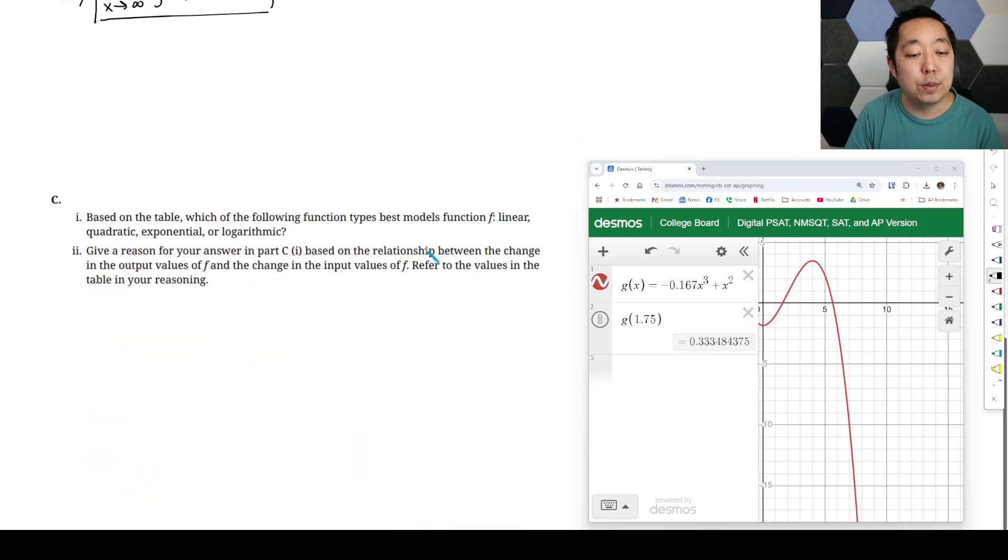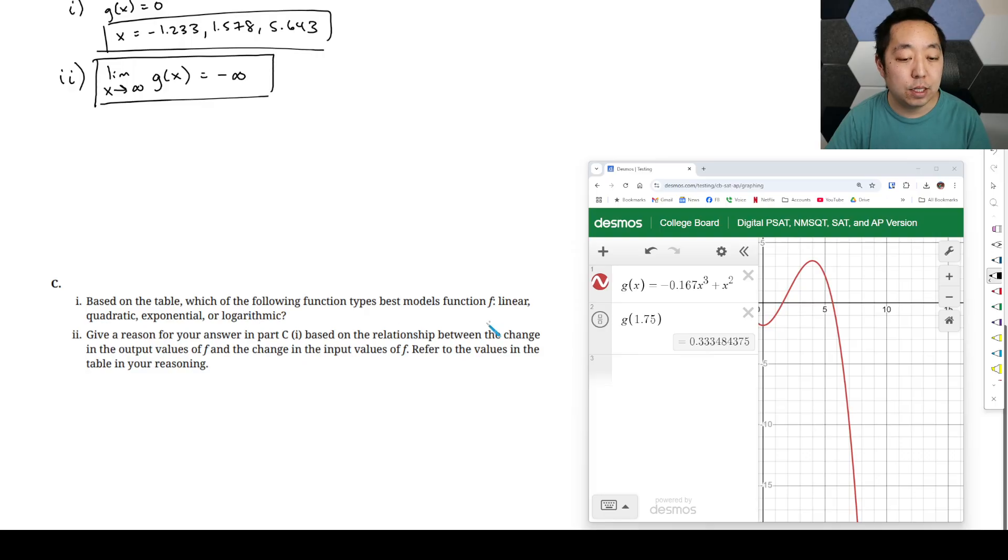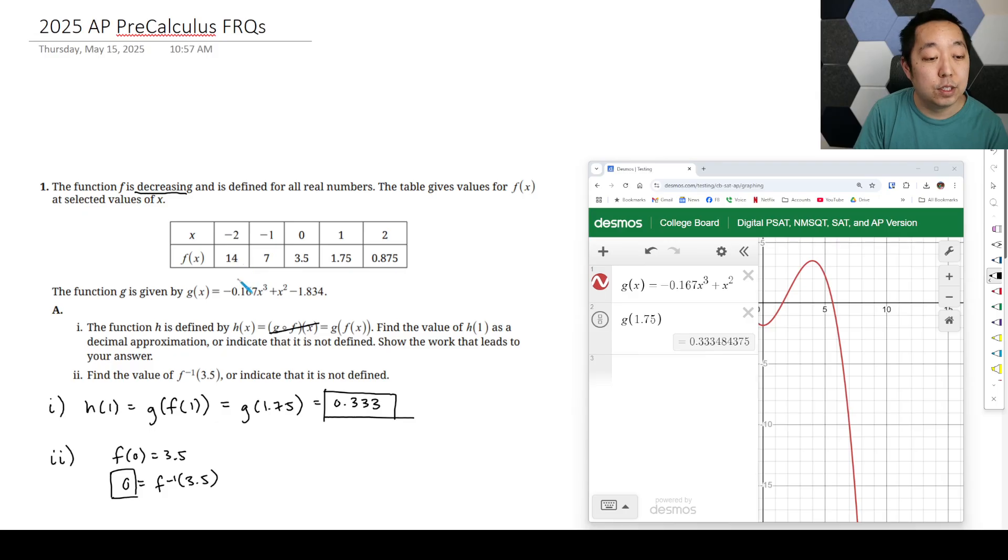Based on the table, which of the following function types best models f? So now we're going back to f, not g, but back to f. And we want to base it, if it's a linear quadratic exponential logarithmic, we want to look at it based on the differences. So the differences here, we would say is you're going to minus seven, minus 3.5, minus 1.75, and then minus 0.875. And so you can see the differences are decreasing. So that's either flattening out that should narrow it down to either a logarithmic.